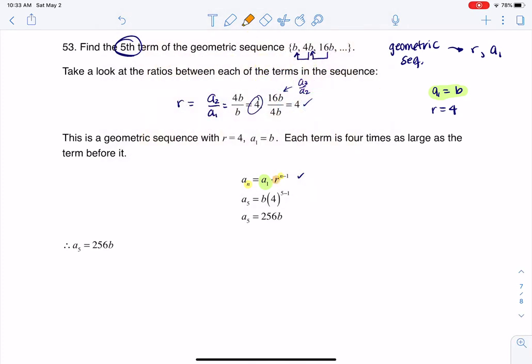And then for the r value, we knew r was 4. So that's what you see me plugging in at this step. When I crunch all of that out, I get 256b, and that's the fifth term in my sequence.